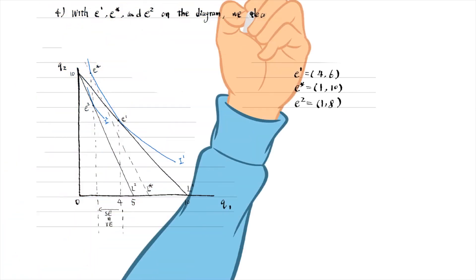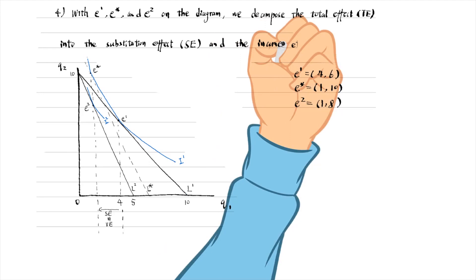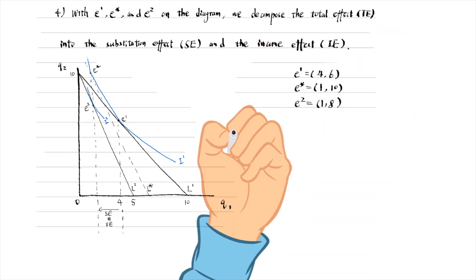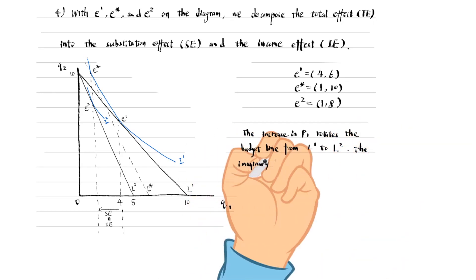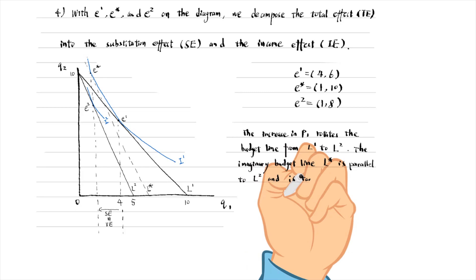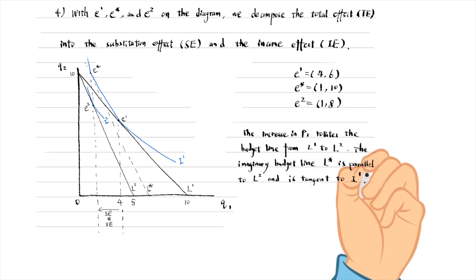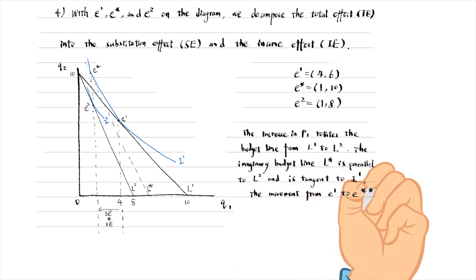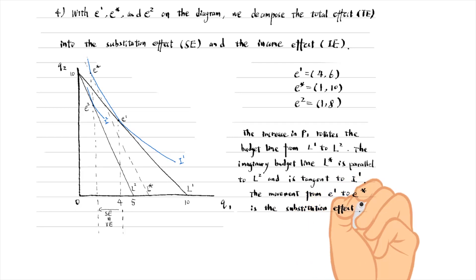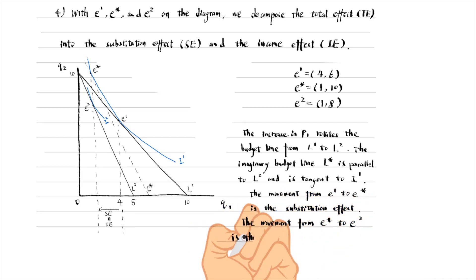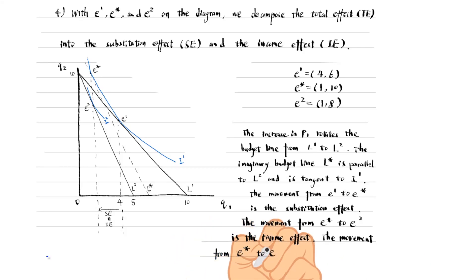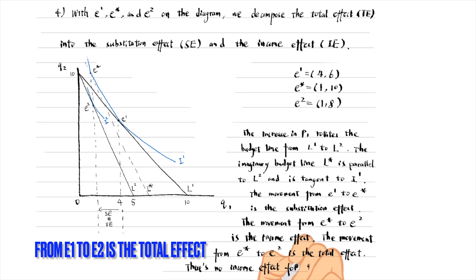In the fourth step, with E1, E*, and E2 on the diagram, we decompose the total effect into the substitution effect and the income effect. The increase in P1 rotates the budget line inward from L1 to L2. The imaginary budget line L* is parallel to the new budget line L2 and is tangent to the original indifference curve I1. The movement from E1 to E* is the substitution effect — the quantity of Q1 demanded falls from 4 to 1. There is no income effect in this case, so the movement from E1 to E2 is the total effect, which is identical to the substitution effect.